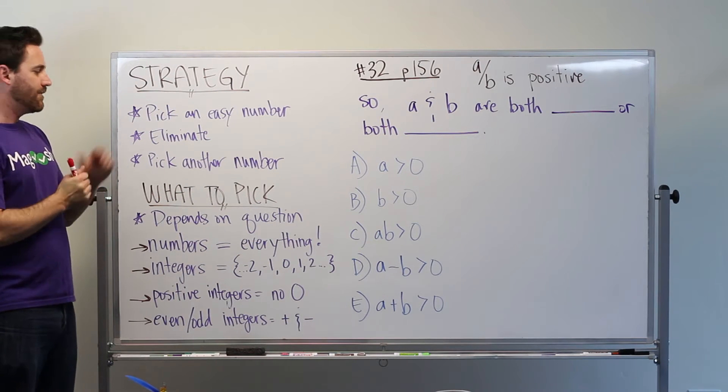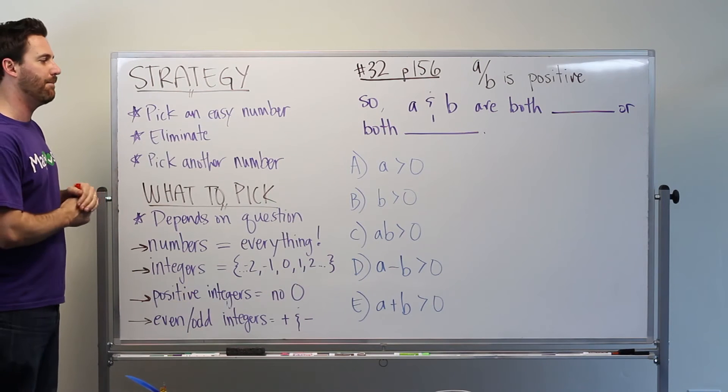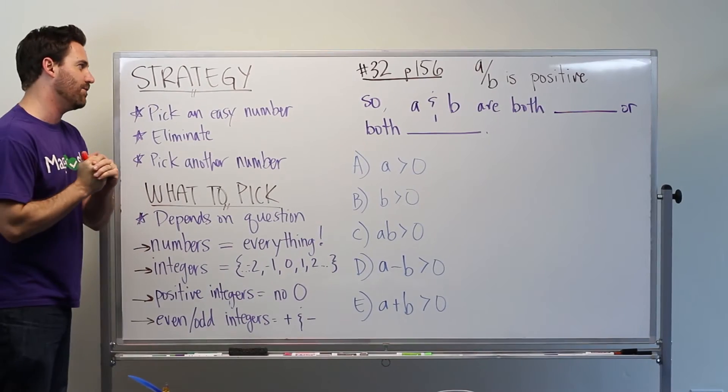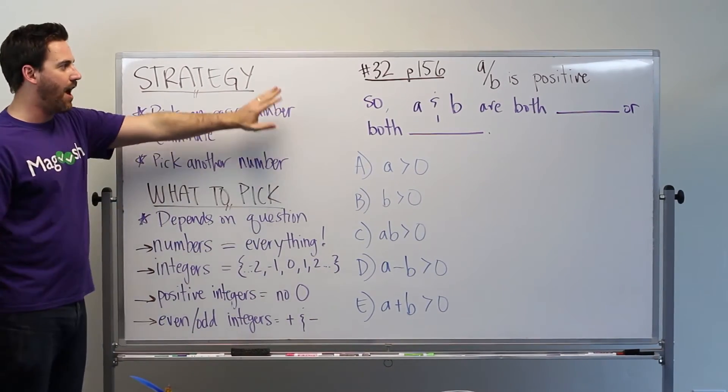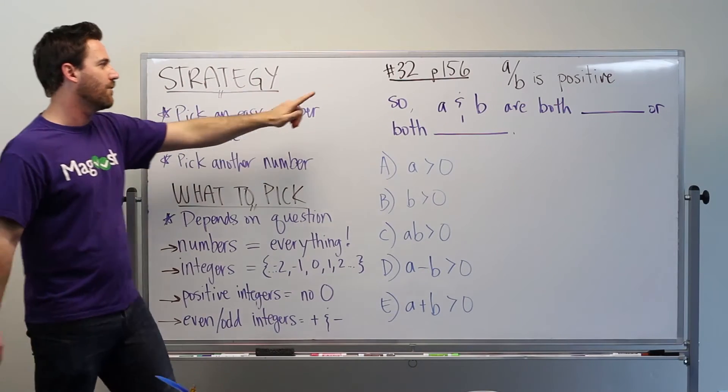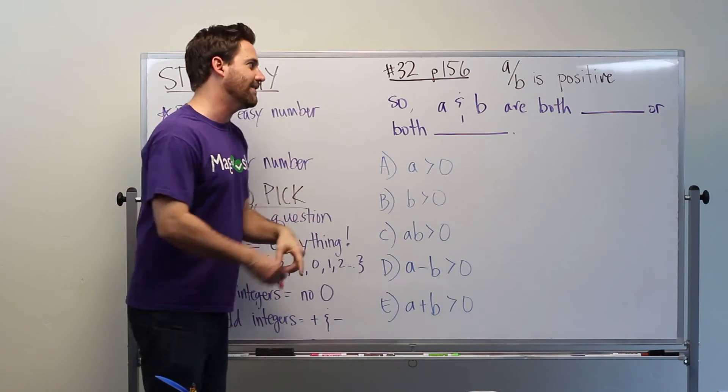Okay, so that is our strategy. We have an idea of how to pick numbers. Now let's go take a look at an example question. This came out of the official guide to the GMAT, the 13th edition. It's on page 156, question number 32.